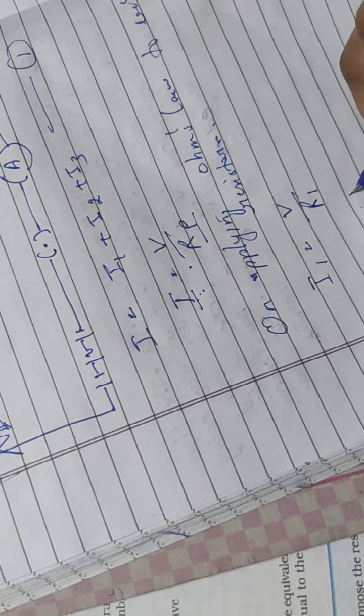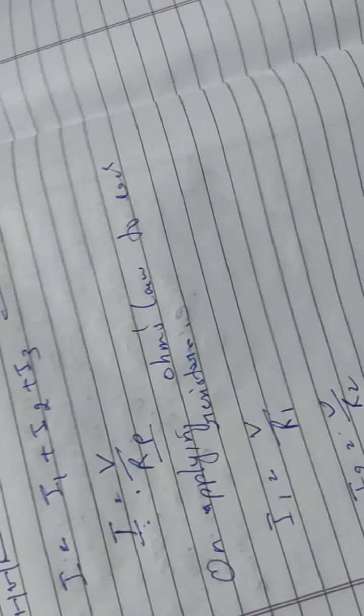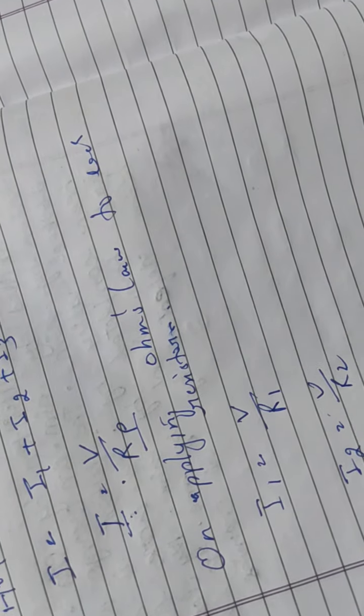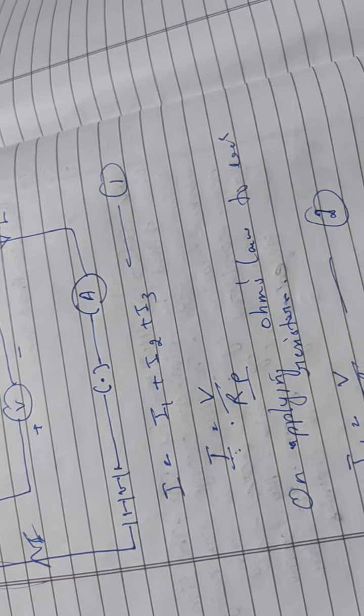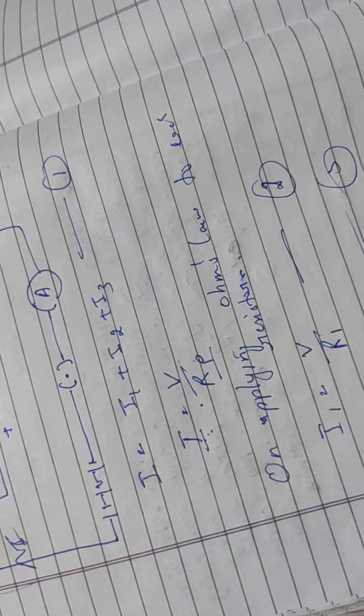Similarly I2 = V by R2. Similarly I3, that is V by R3. These are equation number 2, 3, 4.